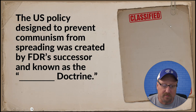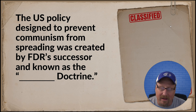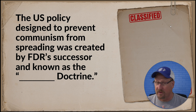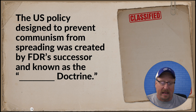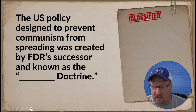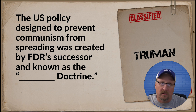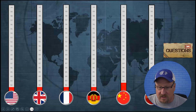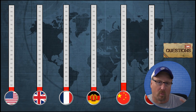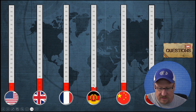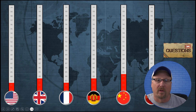Let's do question number one. The question comes up: 'The U.S. policy designed to prevent communism from spreading was created by FDR's successor and was known as the blank doctrine.' The kids take a moment to write their answers. Once they're all finished, you say 'Delegates, show me your boards!' and each person turns their board over. You click on the 'classified' button and the answer comes up — Truman. That's the Truman Doctrine. Now you can see how many delegates got it correctly. Those who got it right only go up one degree; those who got it wrong go up two.